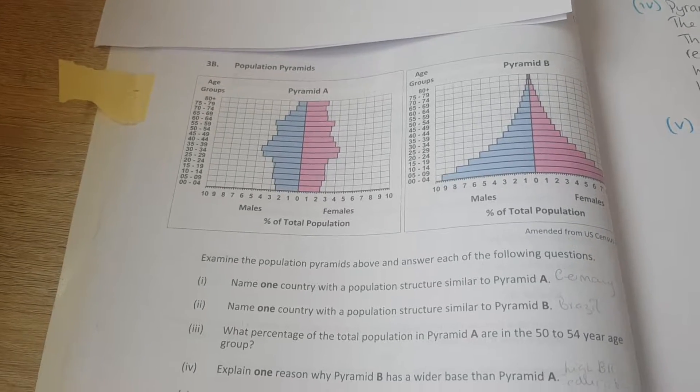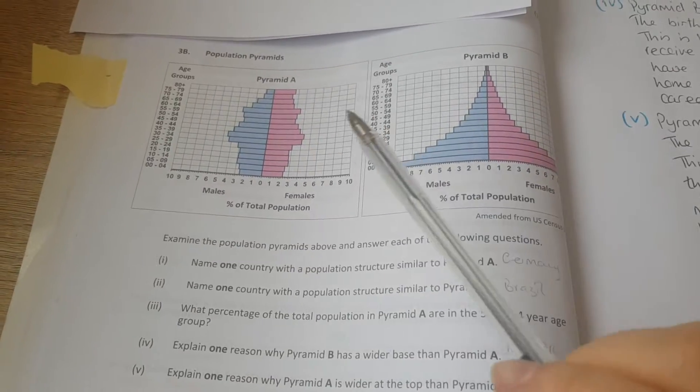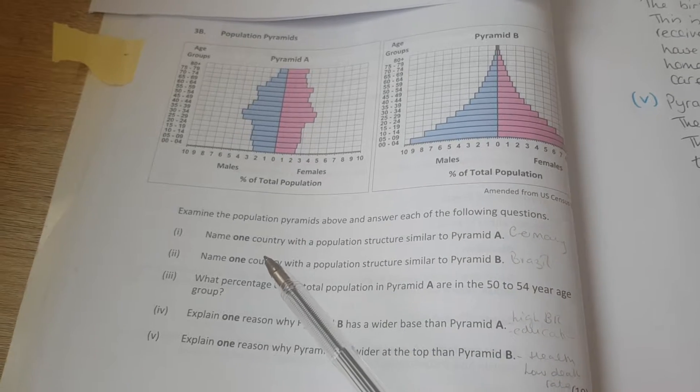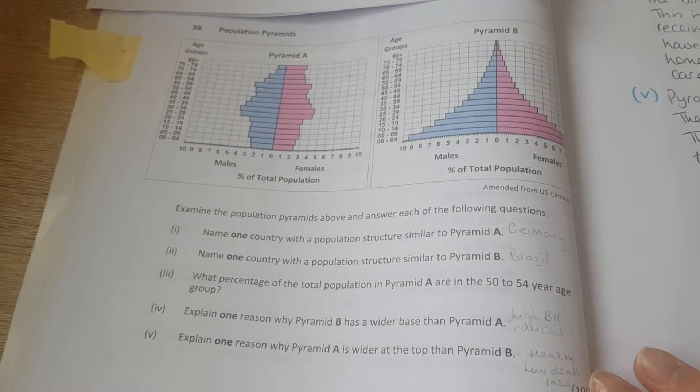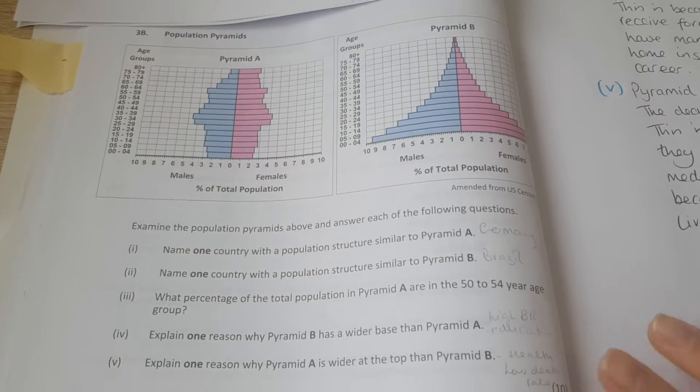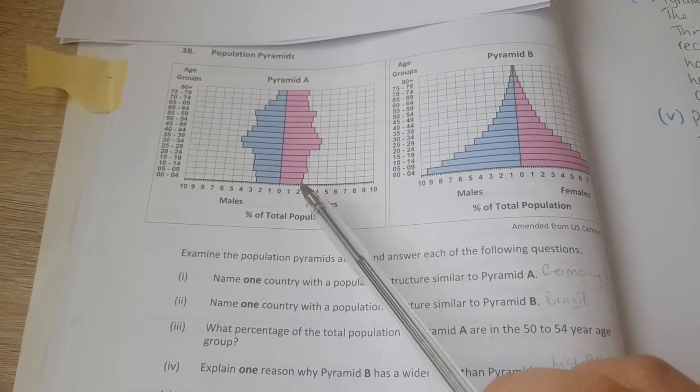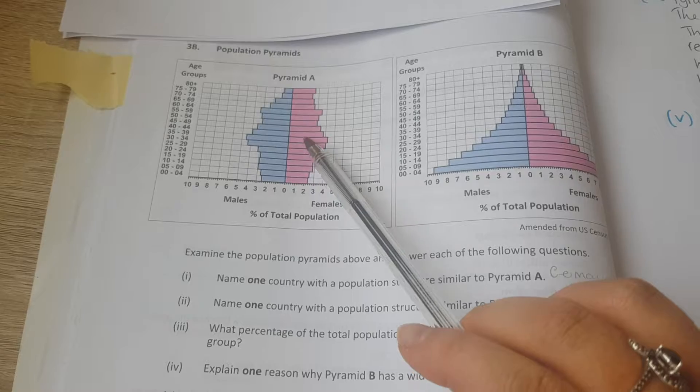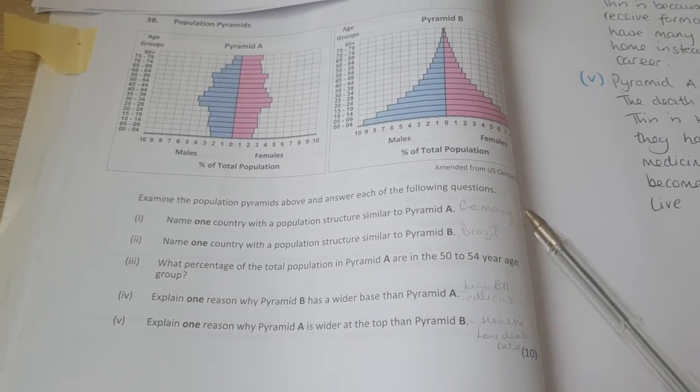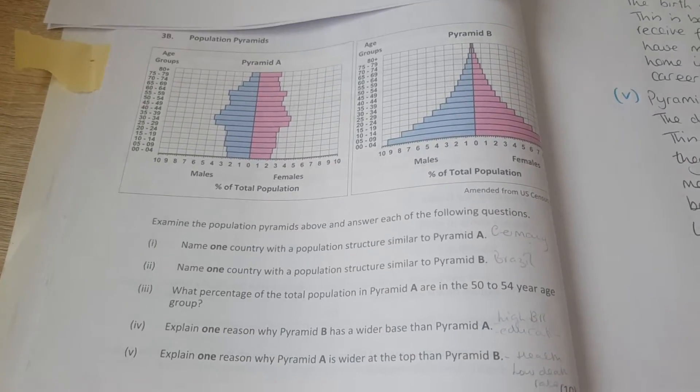This is question 3b on the 2018 paper, so we're looking at population pyramids. The first question is name one country with a population structure similar to pyramid A. I've written down here Germany. Why have I written Germany? Because the birth rate is low and the death rate is quite low throughout. We know that it's a developed country.